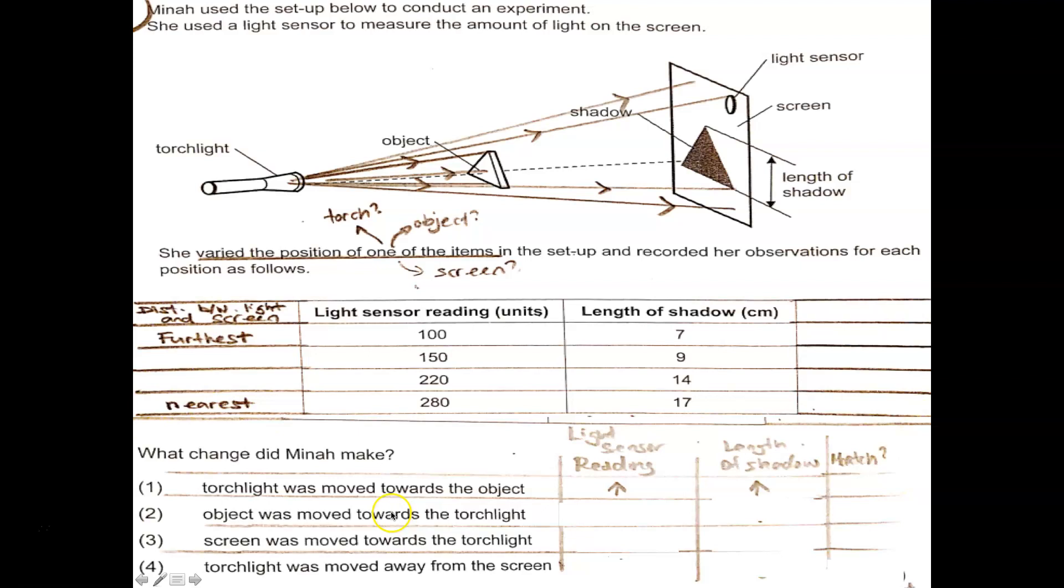What if the object was moved towards the torchlight? If the object was moved towards the torchlight, imagine all the way until it blocks the torchlight. So actually, the light intensity here will suddenly change. So at first, it will not change, right? Because the light that is shining onto the sensor isn't being blocked. But once the object is close enough to the torchlight, it will actually block all the light that is coming out from it.